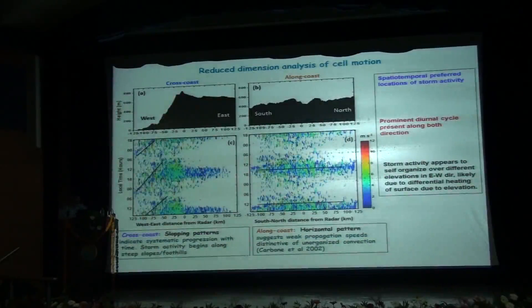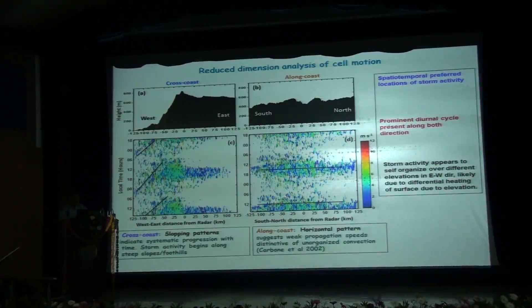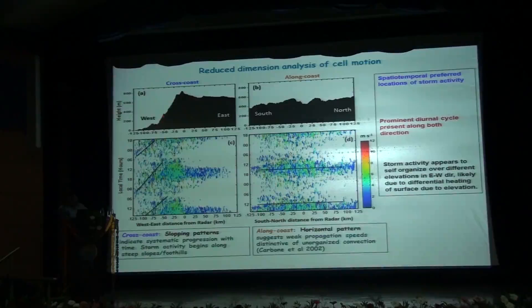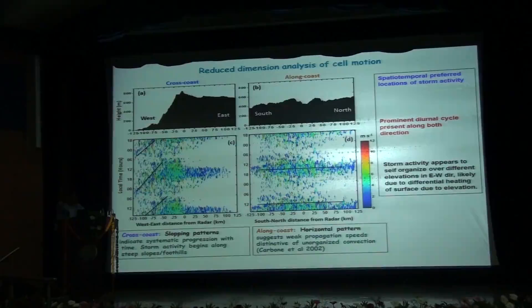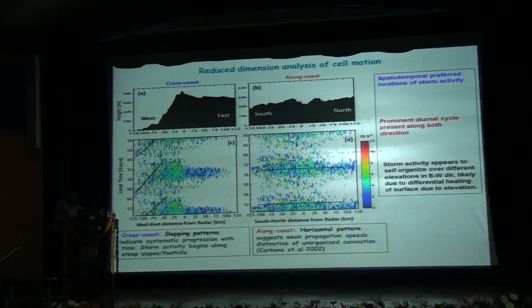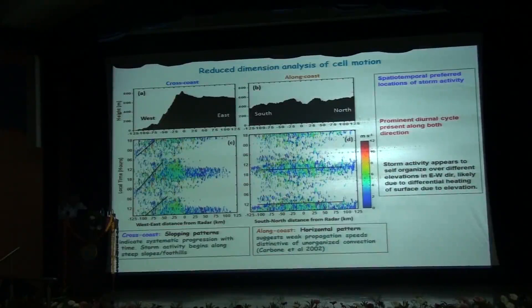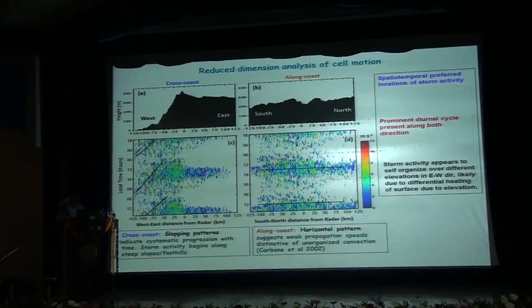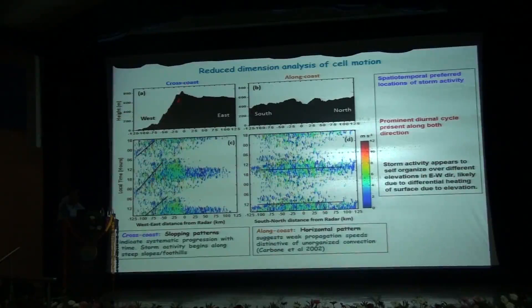Now to assess the effect of mean elevation profile on the spatial structure of convective storms with respect to local time, we undertake the reduced dimension analysis of the cell motion. The first figure shows the latitude average cross-coast component along the west to east direction of the topography and the second figure shows the longitude average along coast dimension from south to north of the study region. The bottom panel shows the diurnal Hovmöller type of diagram where the diurnal cycle is repeated for clarity in the y-axis. So here we see rich topographic variation in the cross-coast dimension whereas the variation is relatively flat in the along-coast dimension. So we plot the storm speed in these plots. We see along the cross-coast dimension we have sloping pattern of storm activity which indicates systematic progression with time. This sloping pattern is matching with the sloping pattern of the topography.